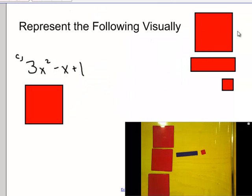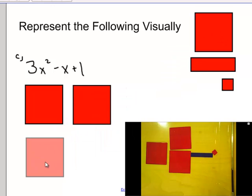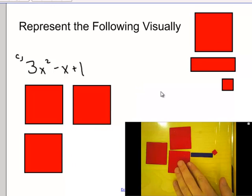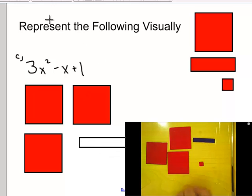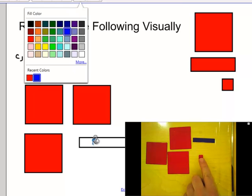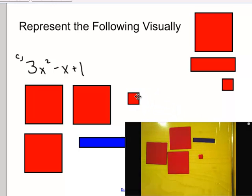In your notes you can draw three big red tiles, a negative x tile. Make sure you color it blue, or at least a different color than your positive tiles. And then one single unit. Three x squared minus x plus one.